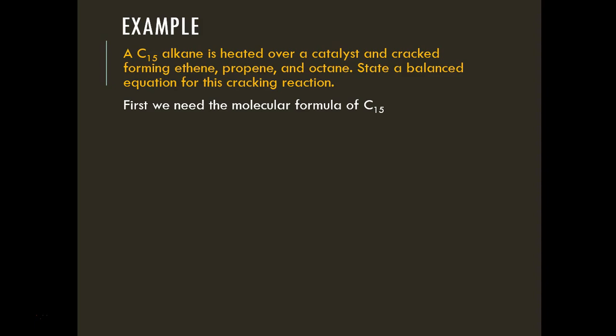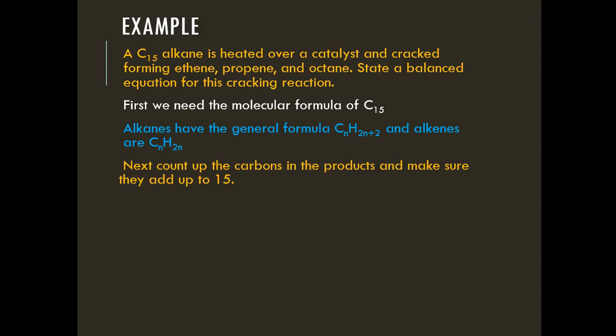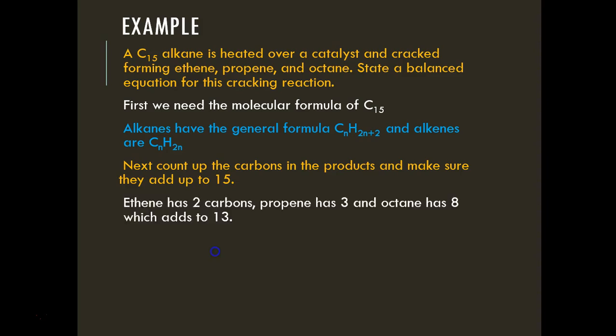First, we determine the molecular formula of the alkane. Alkanes follow the general formula CₙH₂ₙ₊₂ and alkenes are CₙH₂ₙ. We count carbons in the products: ethene has 2, propene has 3, and octane has 8—totaling 13 from one mole of each. Since we need 15 carbons total, we need two moles of ethene to add the 2 remaining carbons. Two octanes or two propenes would exceed 15, so we must have exactly two ethene molecules.